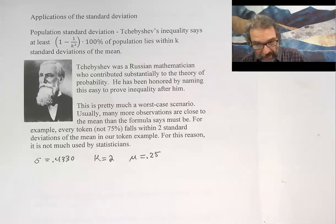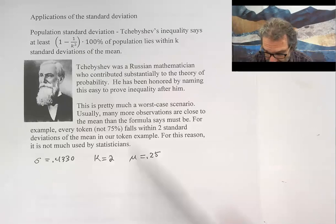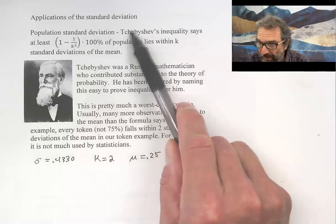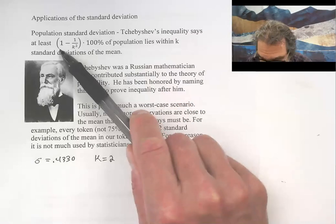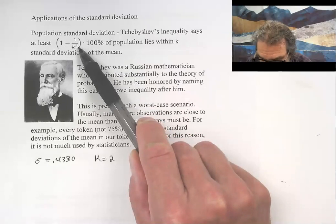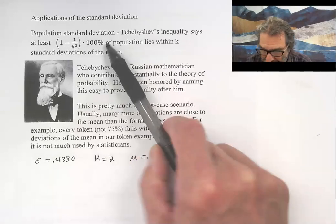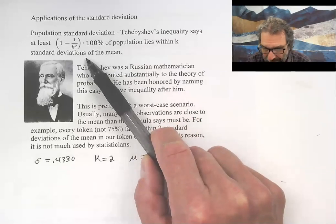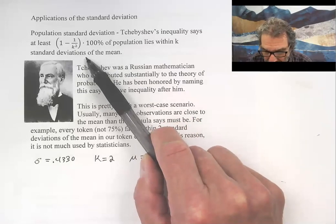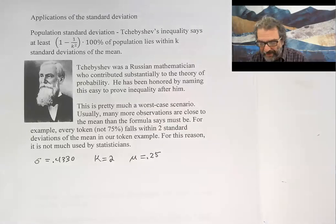First off, we're going to talk about Chebyshev's inequality, which has to do with the population standard deviation. Chebyshev's inequality says that at least (1 - 1/k²) times 100 percent of a population lies within k standard deviations of the mean.